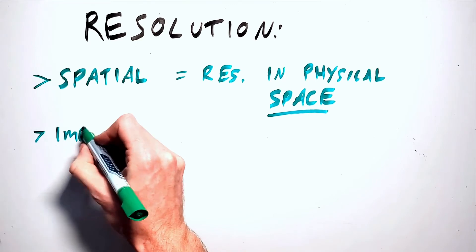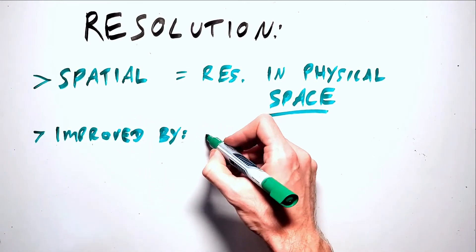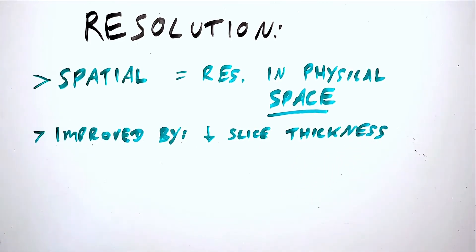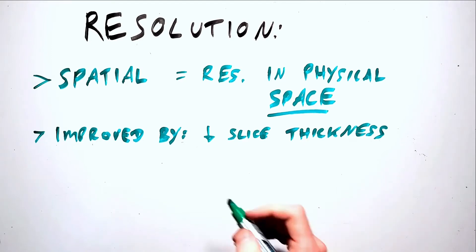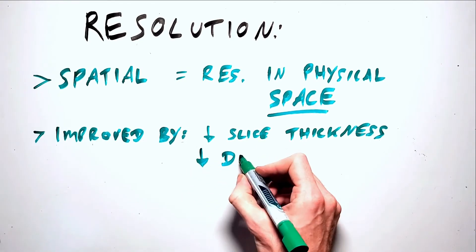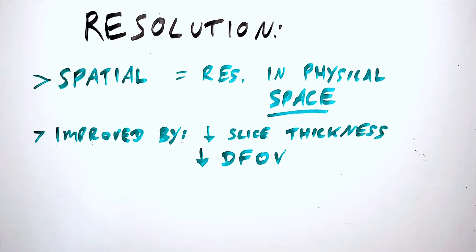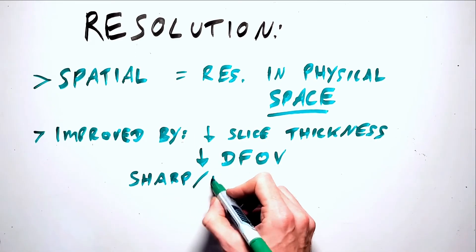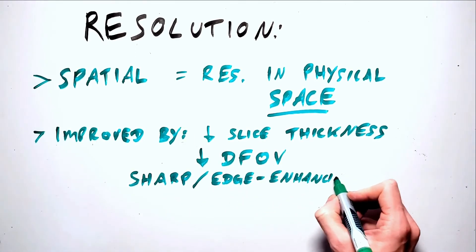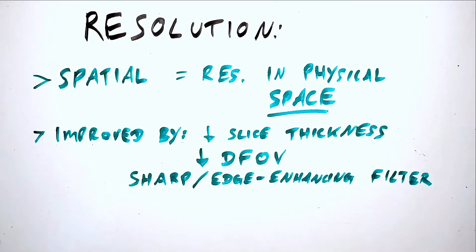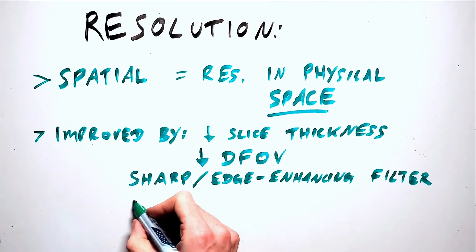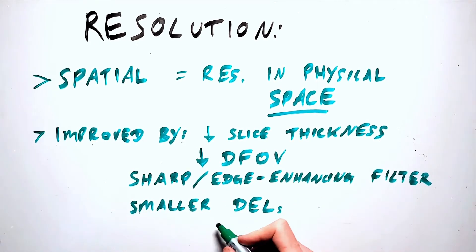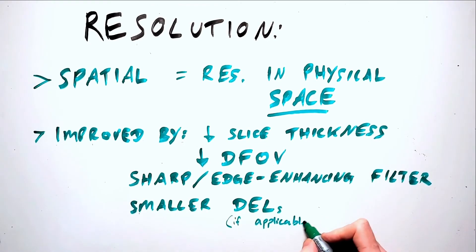A variety of factors affect our scan dataset with regards to these three types of resolution, and some of these factors are within our control. Spatial resolution can be improved by decreasing the slice thickness, decreasing the field of view so that we project a smaller area of the body onto the same sized image matrix, decreasing the voxel and pixel size, using a kernel or filter designed for high spatial resolution such as an edge enhancement filter, or by using smaller detector elements if working on a scanner with an adaptive detector array.